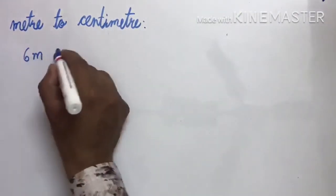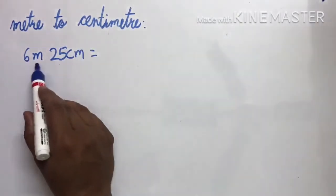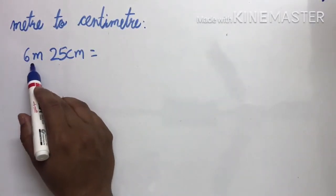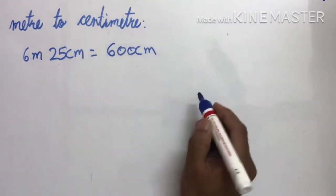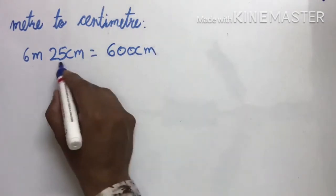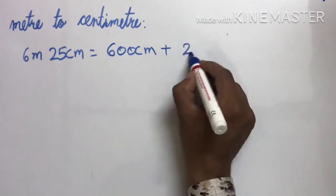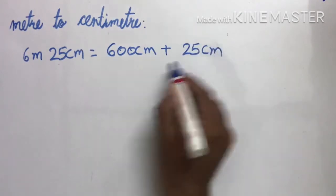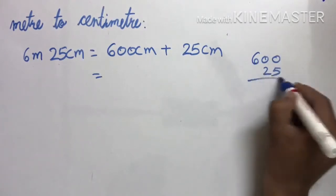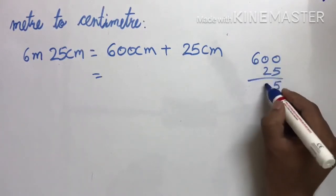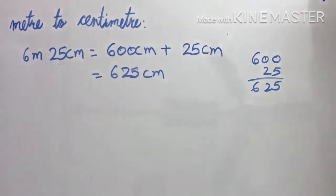6 meter 25 cm को convert करना है। पहले इसको cm में change करना है तो 6 meter कितने cm होगा? 600 cm. Right. ये तो cm में ही है तो उसको change करने की जरुरत नहीं है। Plus करके 25 cm लिखूंगा। तो 600 plus 25 = 625 cm. Done.